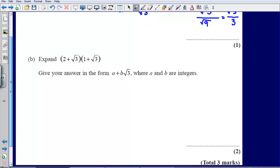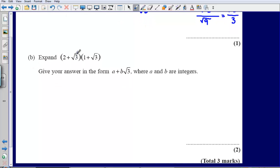Part B asks me to expand 2 plus root 3 in brackets, and then 1 plus root 3 in brackets. Give your answer in the form a plus b root 3, where a and b are integers. Remember, integers just means whole numbers.